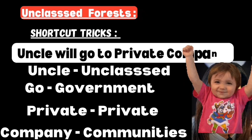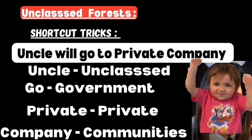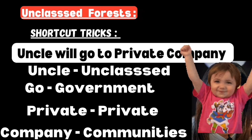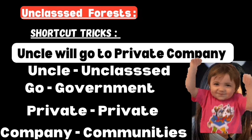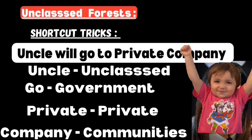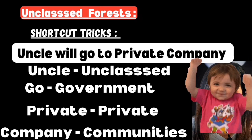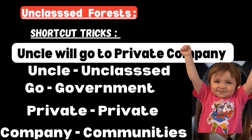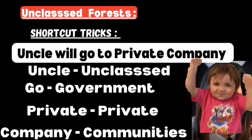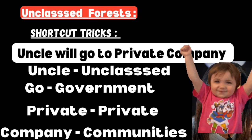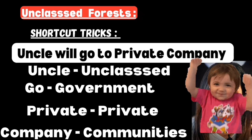Unclassed forest - the shortcut is 'Uncle will go to private company.' Take the word uncle: 'UNC' refers to Unclassed. 'GO' refers to Government, 'private' refers to Private, and 'company' - 'COM' refers to Community.